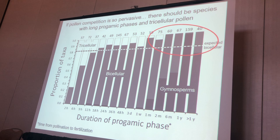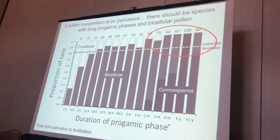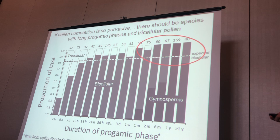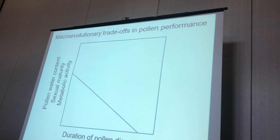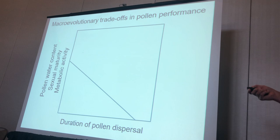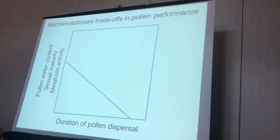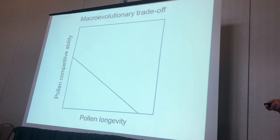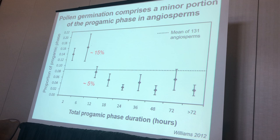Going back to that figure, it's interesting why there are no tricellular species in organisms with really long reproductive life histories — there ought to be. If pollen competition is ruling the world as we think, you should see tricellular competitive phenotypes evolving in all these groups, but you don't. Probably because there is a macroevolutionary trade-off: things that determine competitive ability — like water content, sexual maturity, and metabolic activity — tend to give you a short pollen lifespan. So pollen ecology is really driving this trade-off: it's a trade-off between pollen longevity and pollen competitive ability.